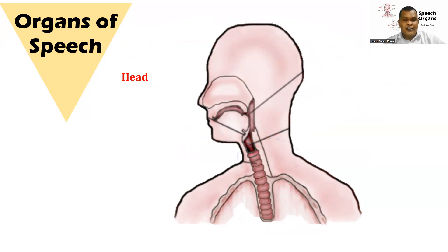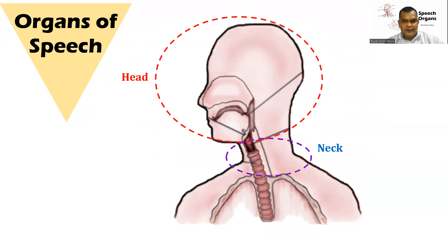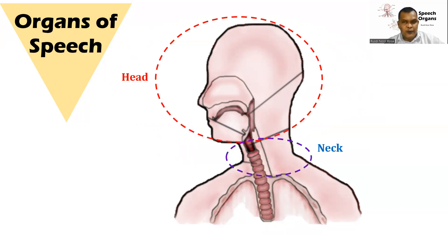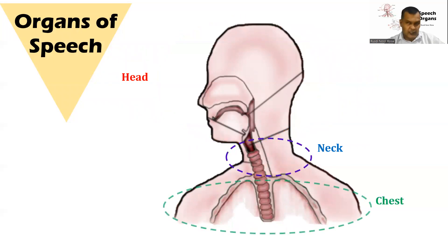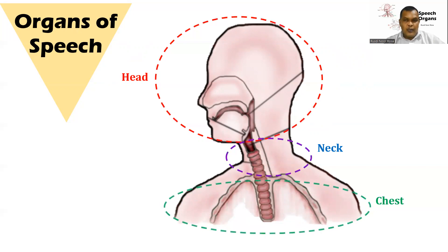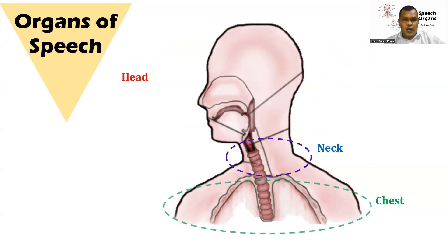The second part is our neck. In our neck, the organ of speech is our larynx. The larynx is part of our throat — exactly the base part of our throat. The last part of our body in which we can find an organ of speech is our chest, and in our chest the organ of speech is our lung.